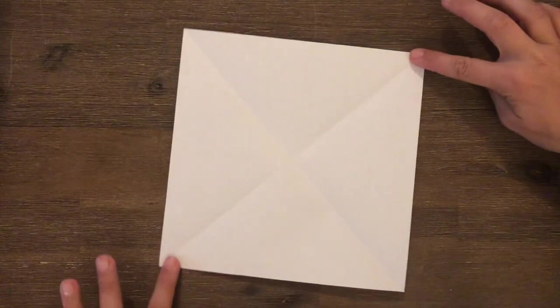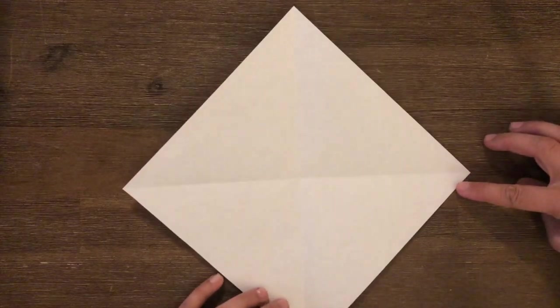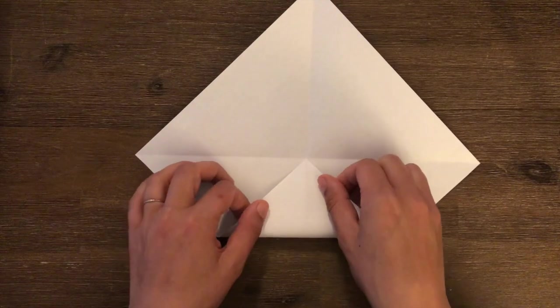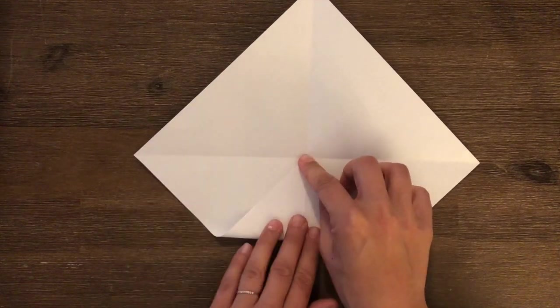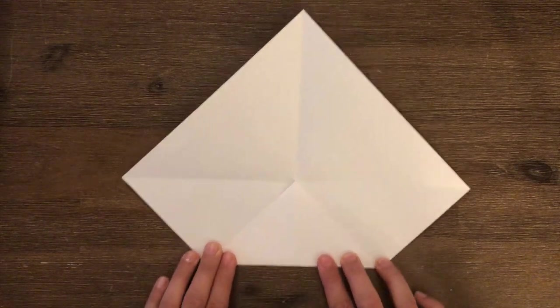Now what I'm going to do is I'm going to turn it so that the point, one of the points, is facing towards me. And I'm going to take that point and fold it in towards the middle. So I've got something that looks a little bit like a sailboat.